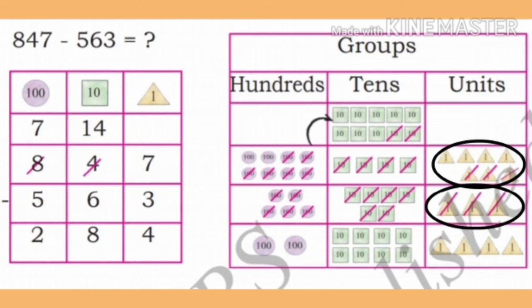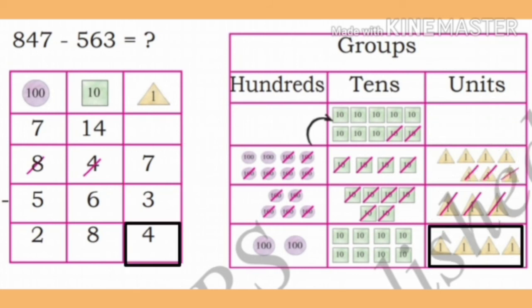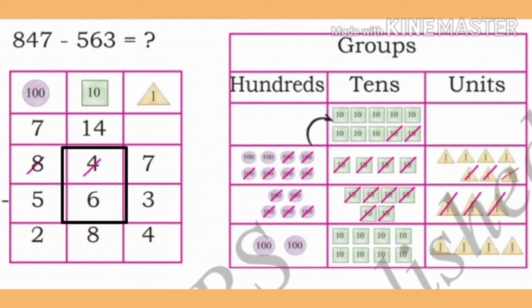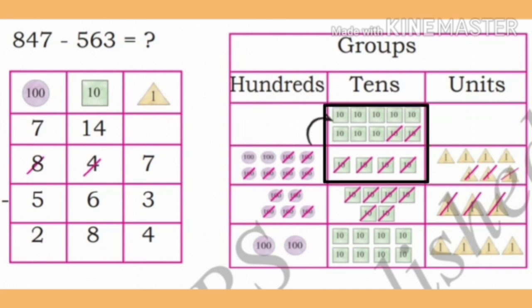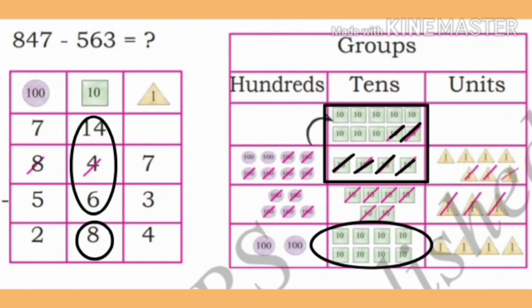First, in the minuend, subtract 3 units from 7 units group and write the remaining 4 in the units group. Now in the tens place of the minuend, we have 4. It is not possible to subtract 6 tens from 4 tens. Therefore, borrow 100 from the hundreds group. 1 hundred has 10 tens. In the tens place, we get 10 plus 4 is 14 tens. On subtracting 6 from 14, we get 8. Now, 7 is left in the hundreds place.